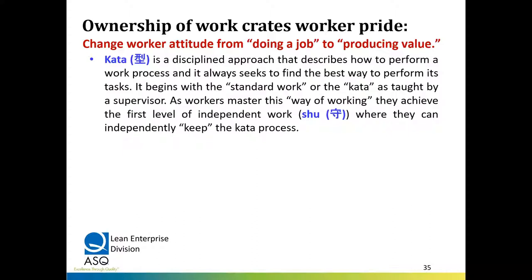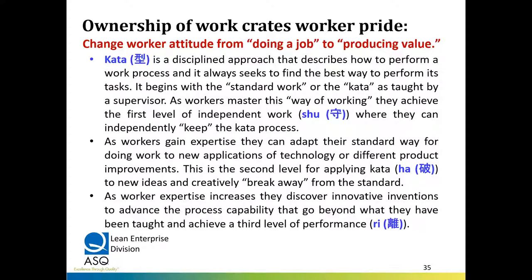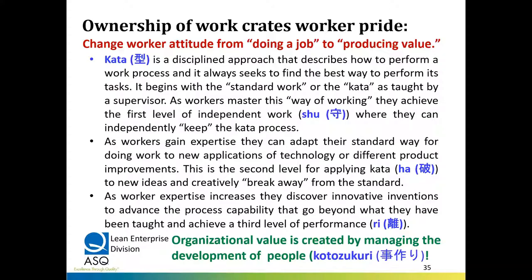This happens through the concept of kata — a particular movement in the martial arts, a disciplined way that describes a process. It begins with standard work or kata as taught by a supervisor. As workers master this way of working, they achieve the first level of independent work called shu — they can independently keep the kata without the support of their master. As workers gain expertise, they can adapt their standard way to new levels of technology, achieving the second level called ha — adapting the system in changing environments. And as they experience more, they become creative or innovative, reaching the third level called ri — creating things that have gone beyond what the masters taught them.